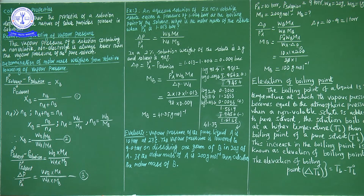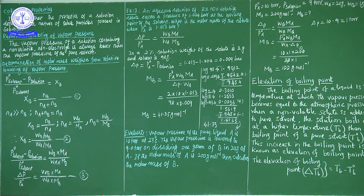For a pure solvent, the liquid surface is fully available for solvent molecules, so vapor pressure is more. But when non-volatile solute is added, the surface of the solution consists of both solvent and solute particles, so the vapor pressure of the solution is lower than that of the pure solvent. By using relative lowering of vapor pressure, we can calculate the molar mass of the solute.